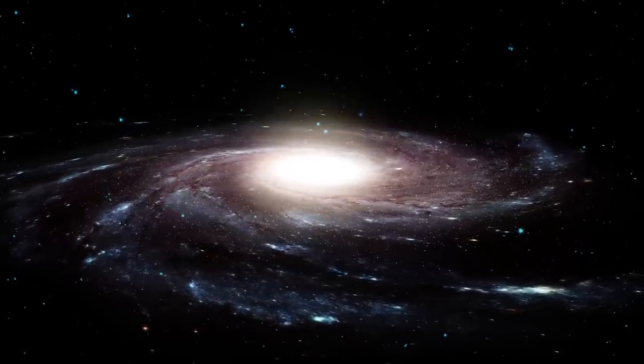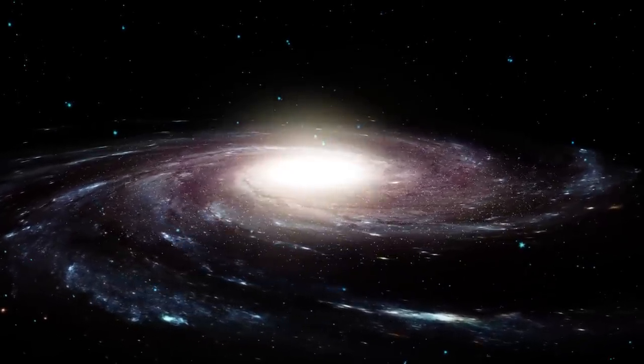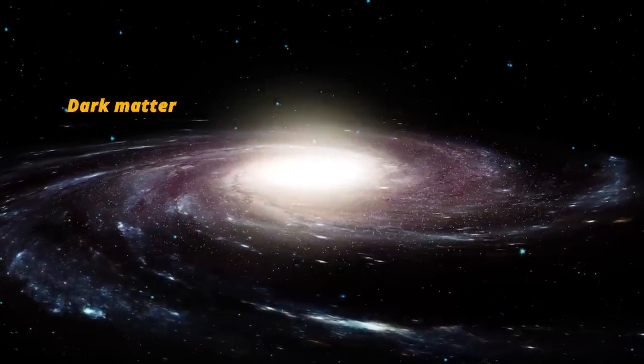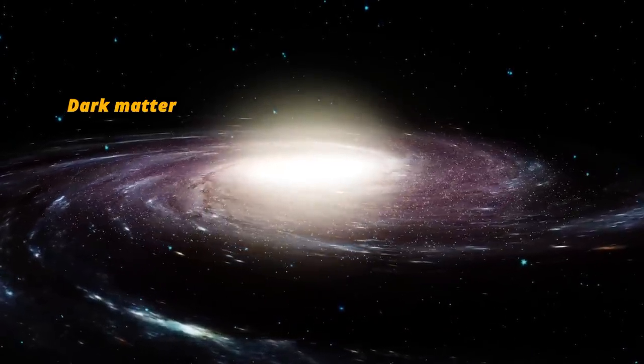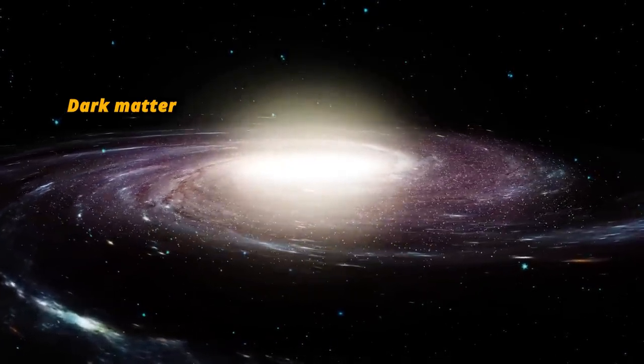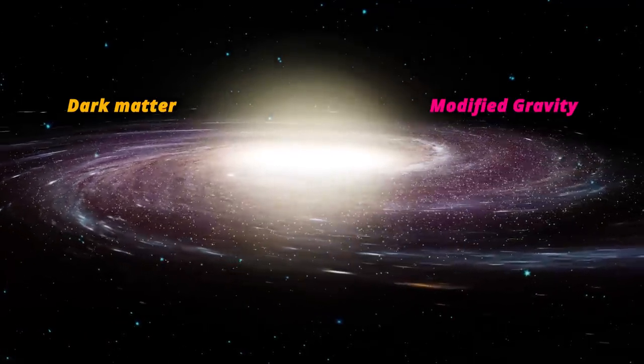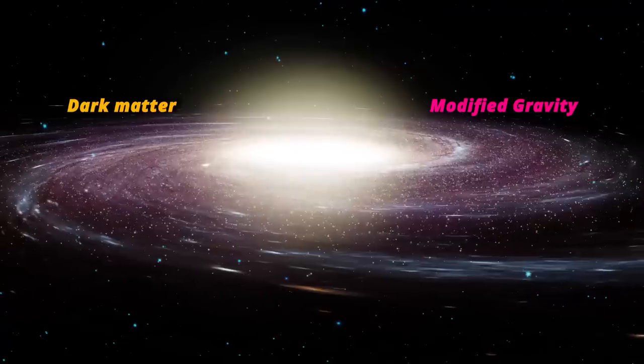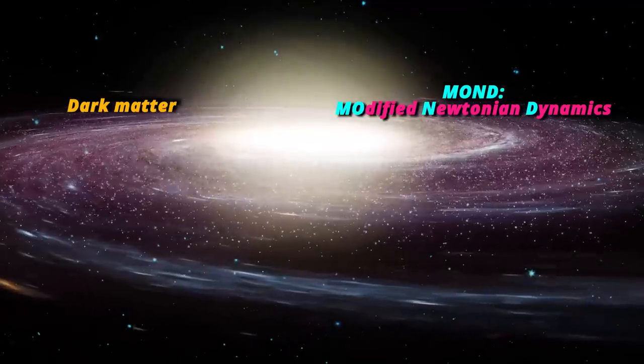One is to say that the universe is filled with a transparent substance that hovers around galaxies in clouds. It's called dark matter. The other idea is that there's something wrong with our understanding of gravity. This idea is called modified gravity. For slow-moving bodies, this modified gravity simplifies to what's known as modified Newtonian dynamics, MOND for short.